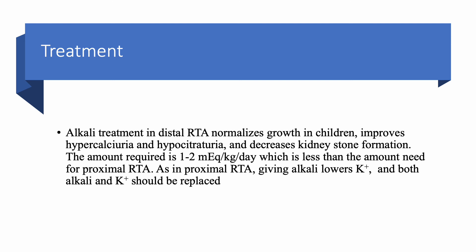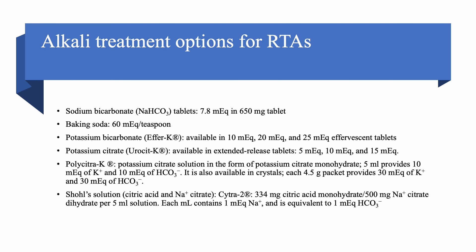Treatment is very important, especially in children, because alkali must be given to normalize growth. As with proximal RTA, you need to normalize their bicarbonate. This treatment improves hypercalciuria, improves hypocitraturia, and decreases kidney stone formation. The dose here is much less than with proximal RTA — only 1 to 2 mEq per kg per day is sufficient. You must replace both potassium and alkali, starting with potassium first and then giving alkali, otherwise you will end up with hypokalemia.